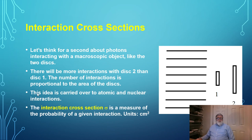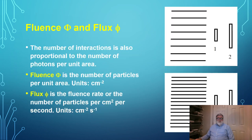We carry this over to atomic and nuclear physics. The notion is that if there are interactions with some entity, the probability of an interaction is intrinsic to the scatterer — we call this the cross-section. The units of cross-section are square centimeters, and later we'll talk about specialized units called barns. The cross-sectional area of the scattering object will affect the number of interactions.